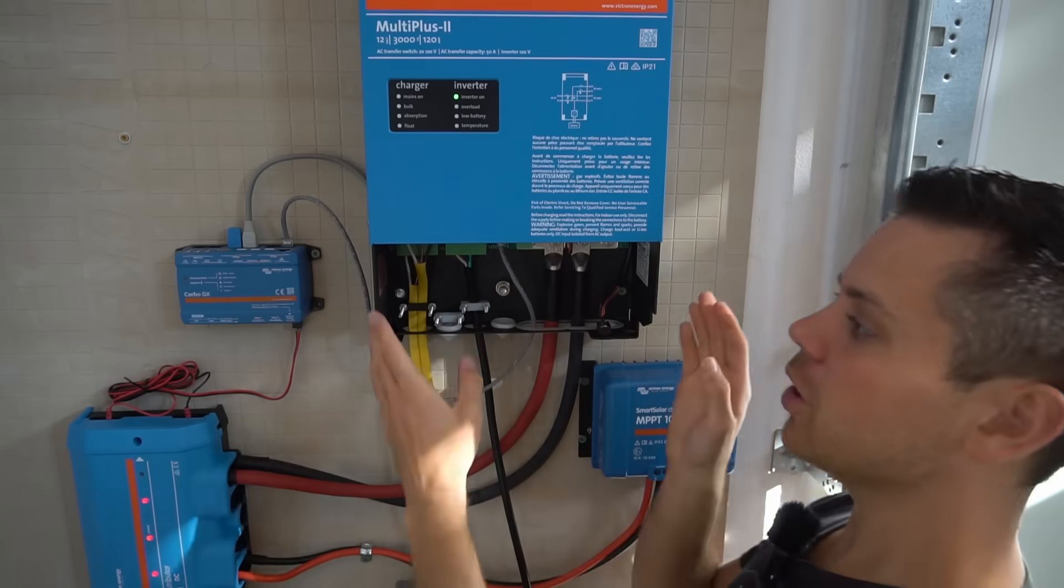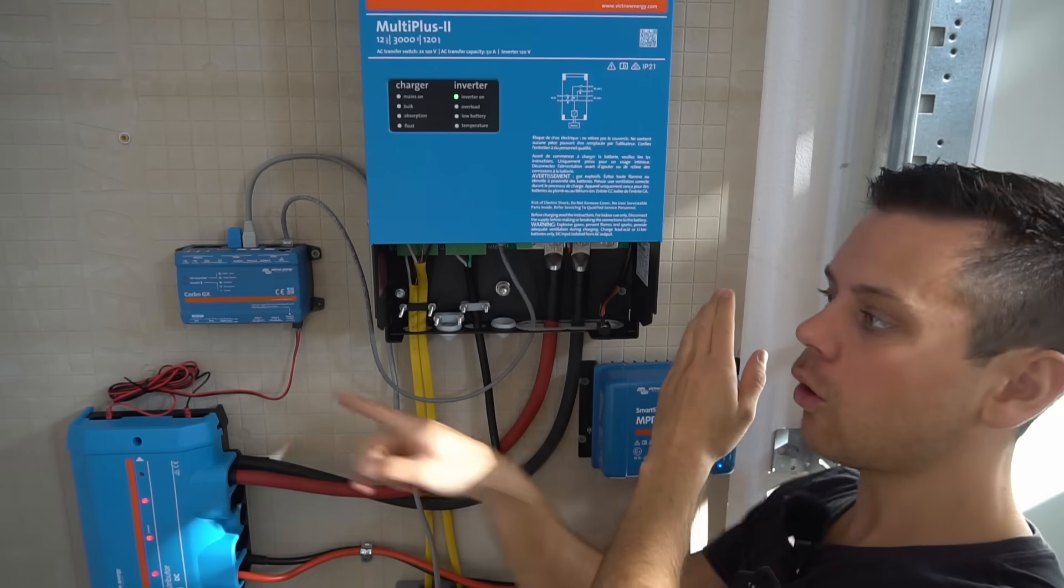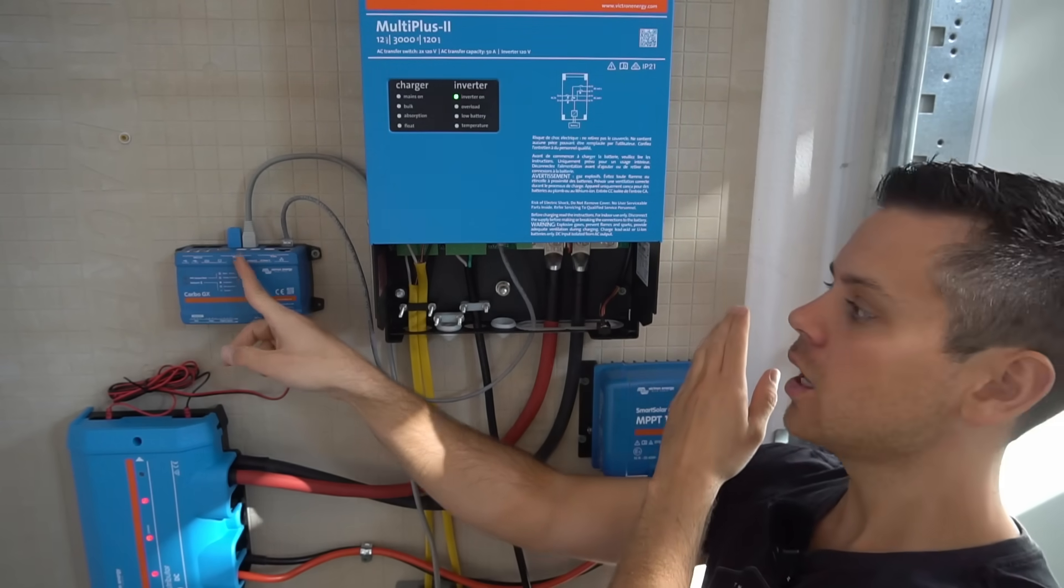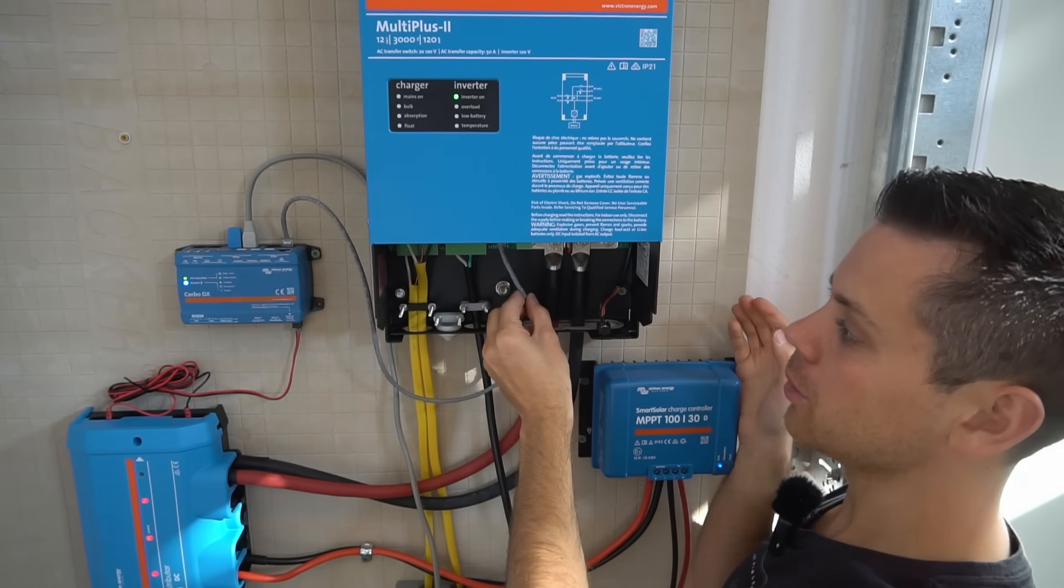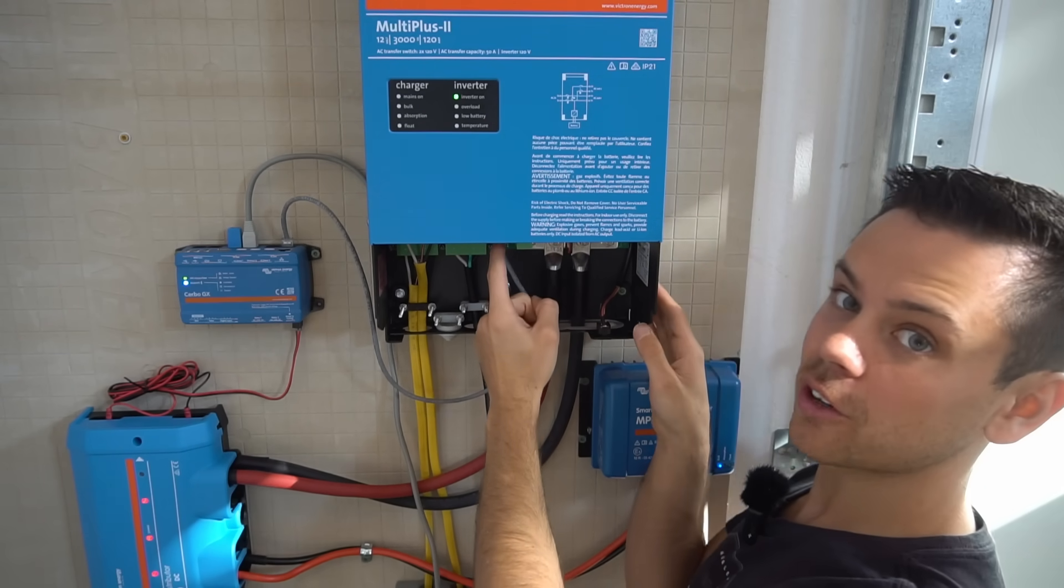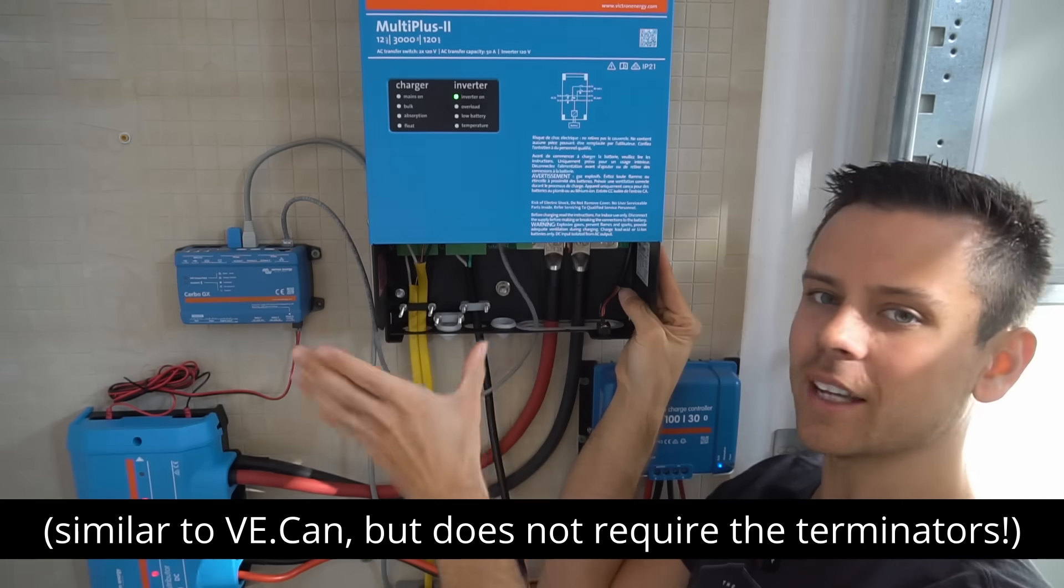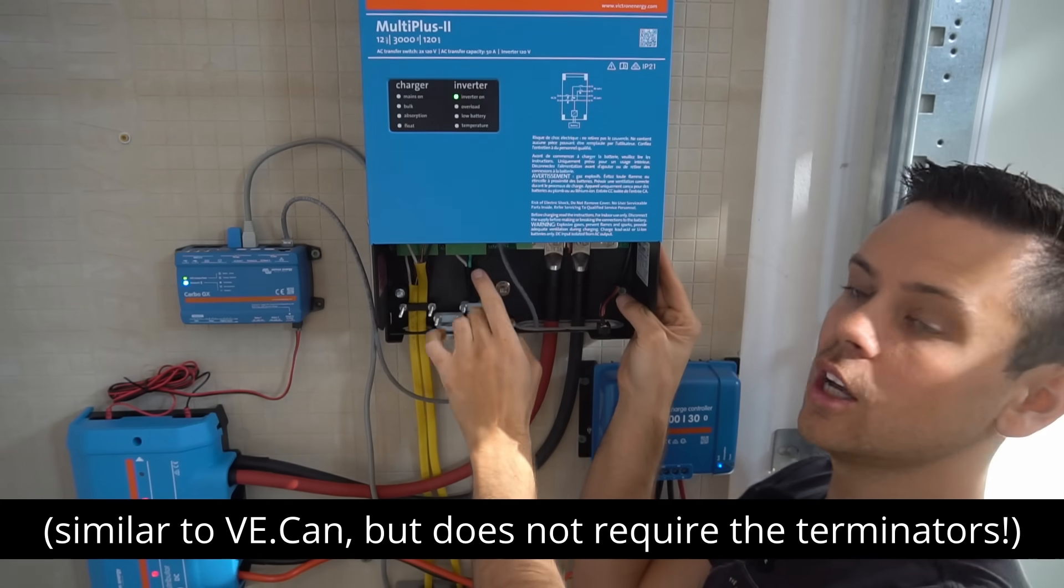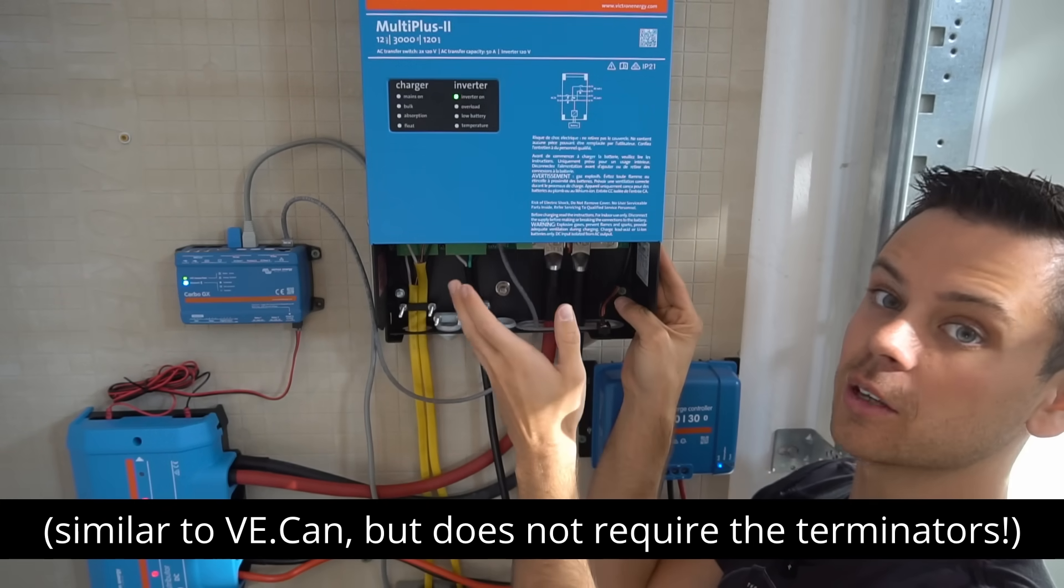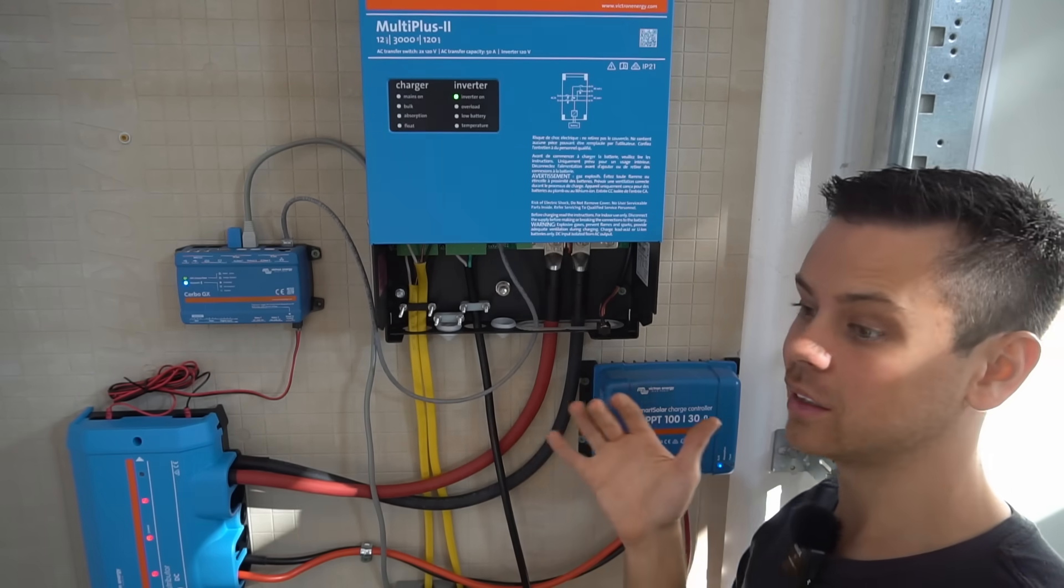Now what's really cool is if you had a second inverter over here, you don't have to run a cable all the way over to the Cerbo GX. You can daisy chain them together with this communication cable. So this second inverter would be connected to this first inverter through the second communication port right here. And that's why there's always two communication ports when you see VE bus so that you can daisy link chain them together.